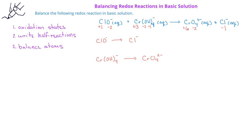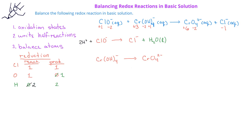Let's begin with the reduction half reaction. We see one chlorine atom on each side and one oxygen on the reactant side. We can balance the oxygen by adding a water molecule to the product side. Now we have two hydrogens on the product side, so we add two H⁺ ions to the reactant side. However, since this is basic solution, we add one hydroxide ion for every hydrogen ion, to both sides. So we add two hydroxides to each side, giving one chlorine, three oxygens, and four hydrogens on each side.